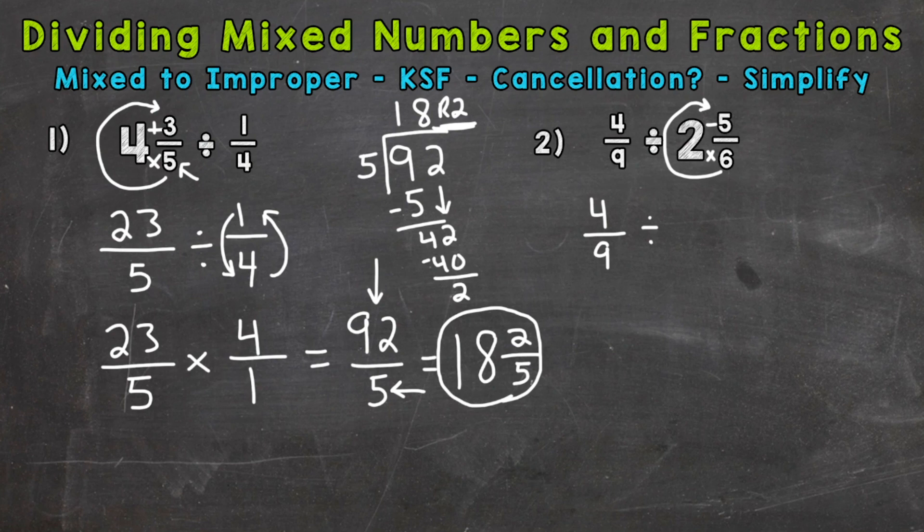Multiply and add. 6 times 2 is 12, plus 5 is 17. Keep the denominator of 6 the same. So now we're all set up and we can go through our dividing fractions steps.